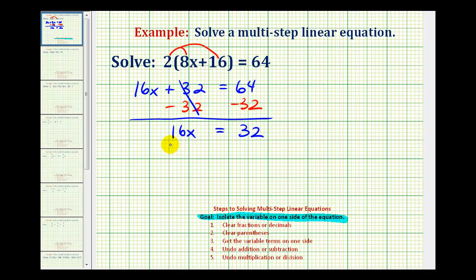So now we have 16x equals 32, and again, since these are connected by multiplication, we'll have to perform the opposite operation to both sides, which means we'll have to divide both sides by 16.